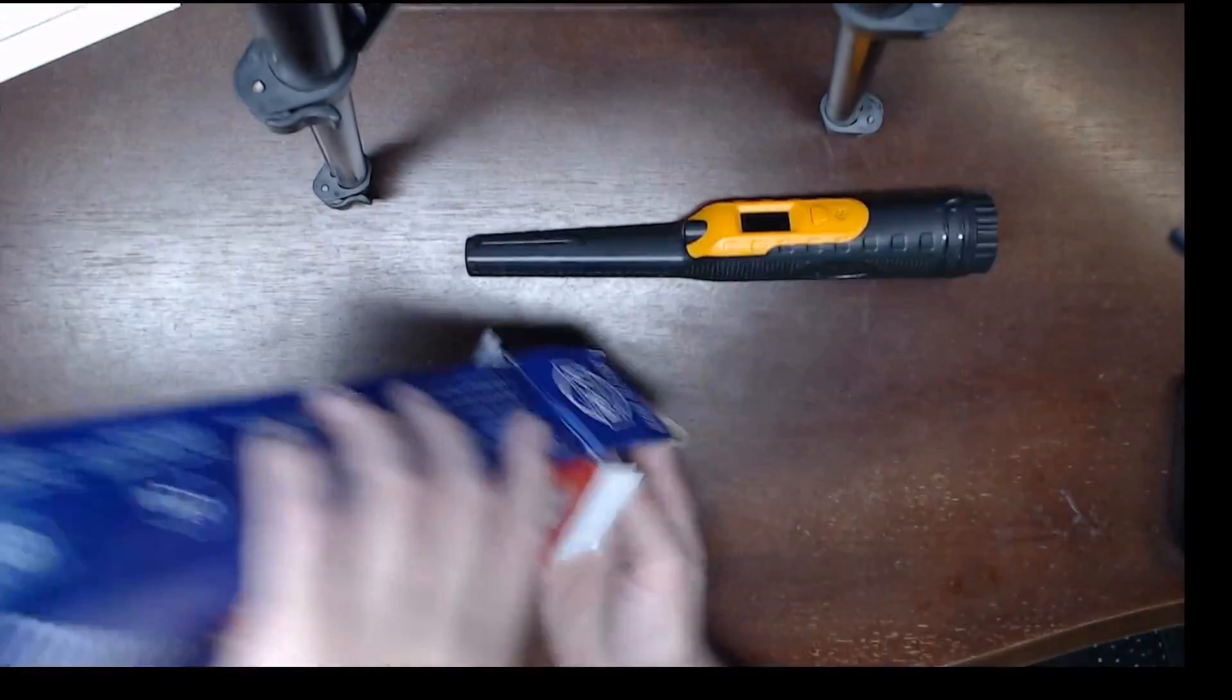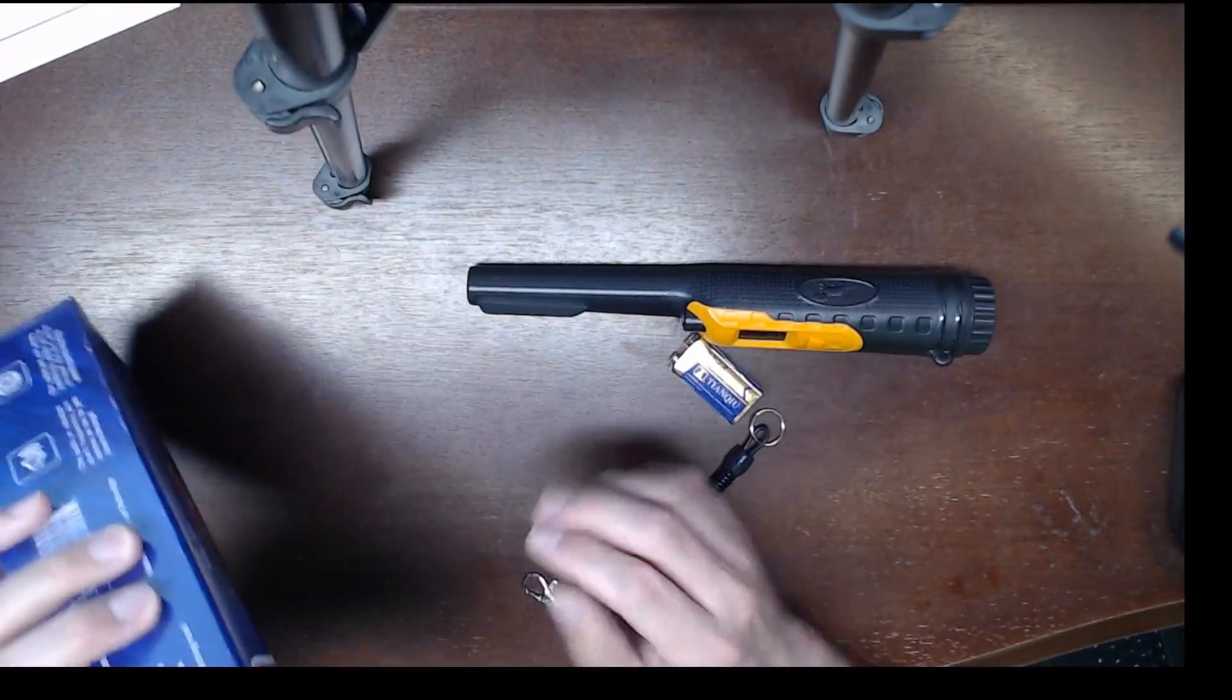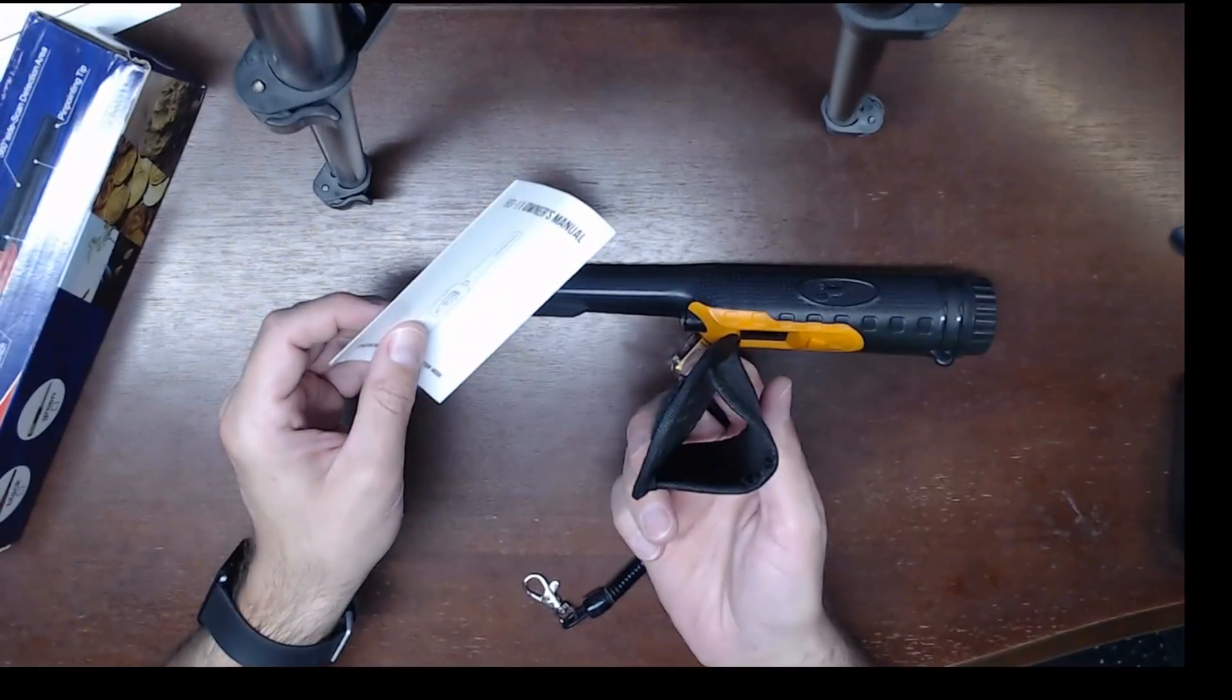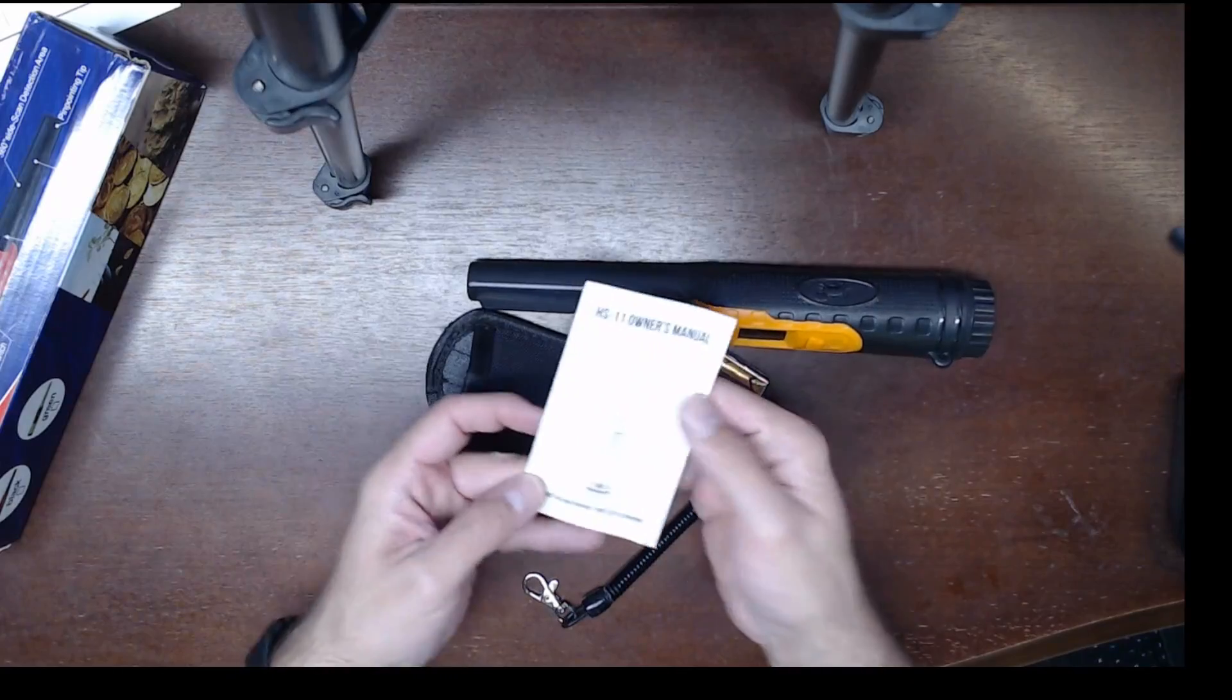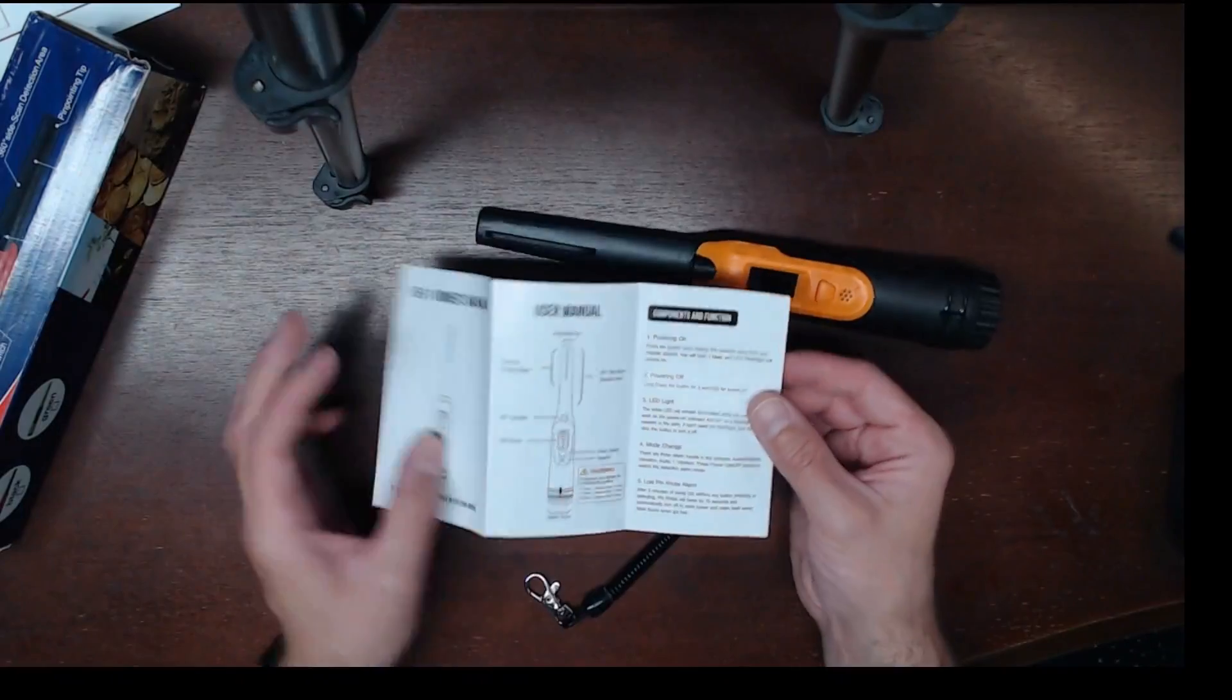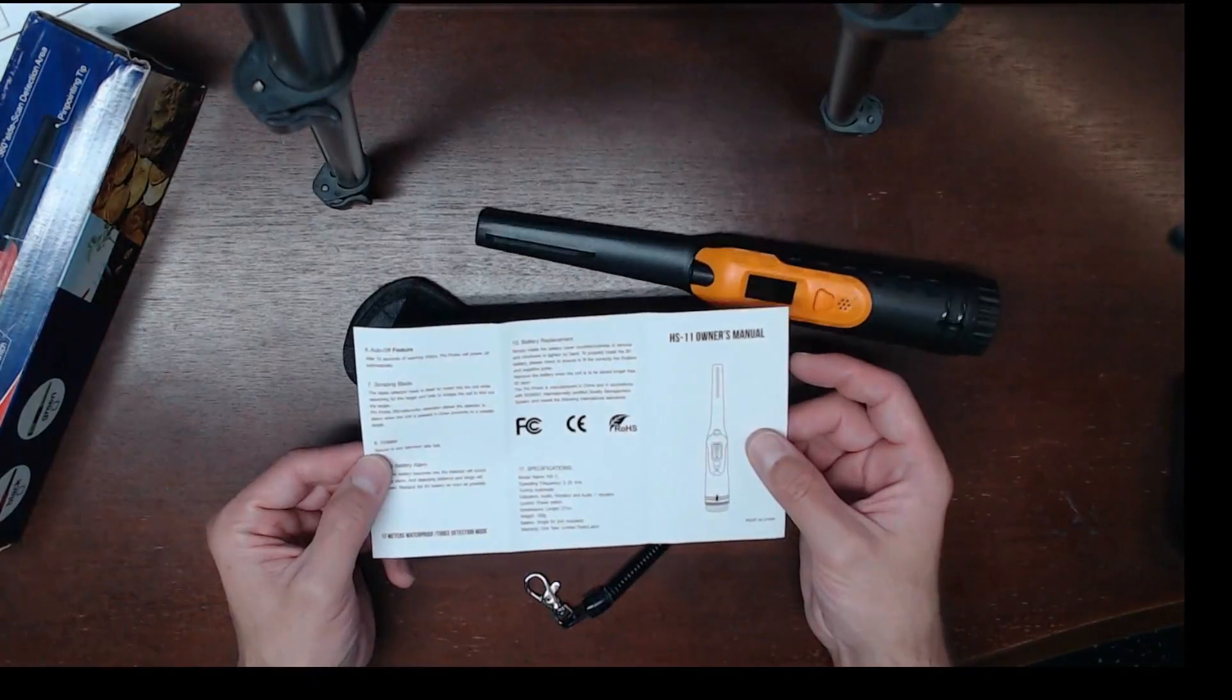This appears to be a very compact unit. It comes with everything you're going to need to get going. You have your metal detector itself, you have a little holster that you can connect to your belt, the user manual, which most people aren't going to really look at too much.